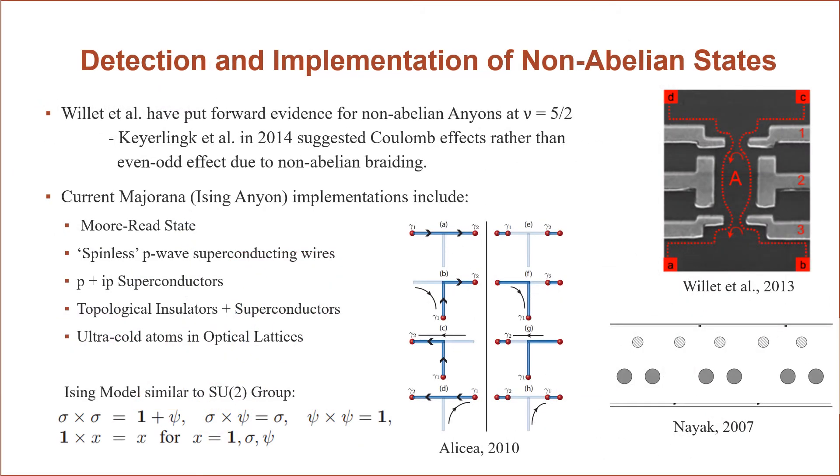Obviously then the detection and measurement of these non-abelian states is of the utmost importance for the continuation of topological quantum computation. So, for example, in 2013, Willett et al. put forward evidence for non-abelian anyons at nu equals 5 halves, using an interferometry experiment where they saw resistance coupled to magnetic field in a manner that was strictly non-abelian, and in terms of an even-odd effect that was not present in their abelian controls. But Kairlink, a year later, suggested that this could actually be explained in terms of Coulomb effects rather than the even-odd effect. And so that result is still up in the air.